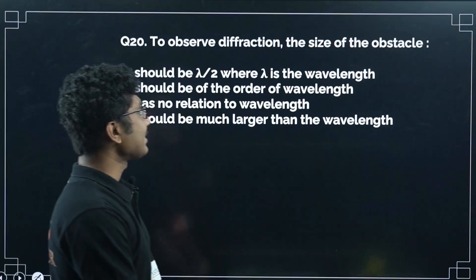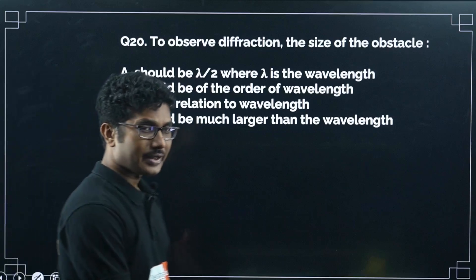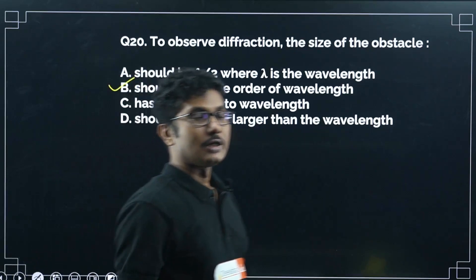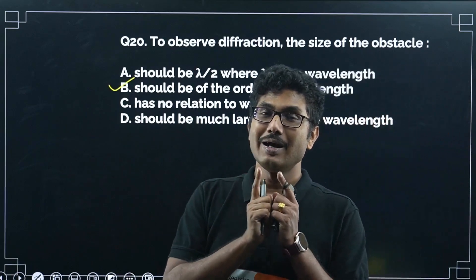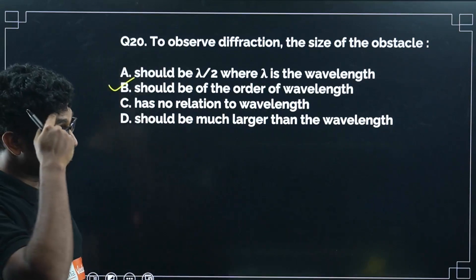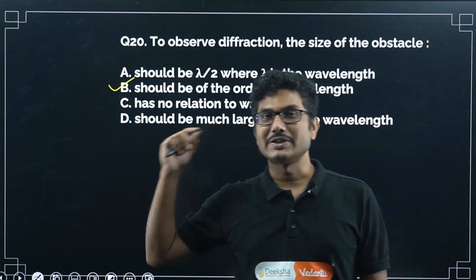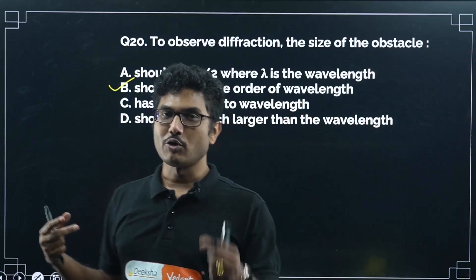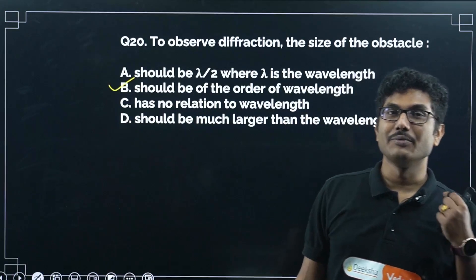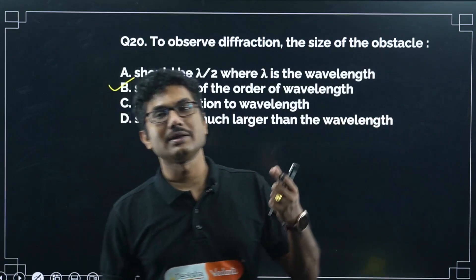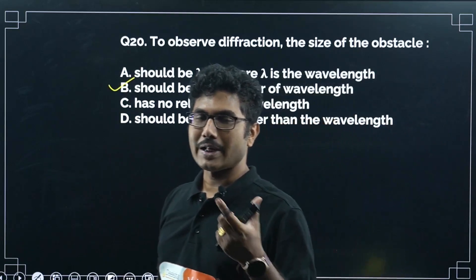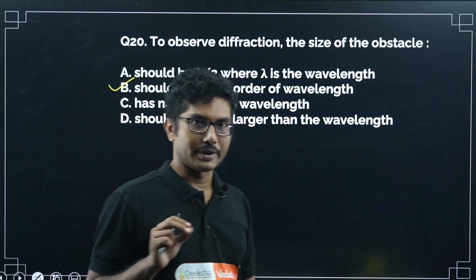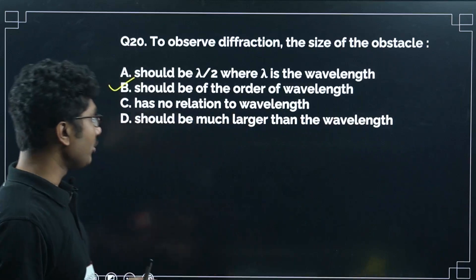To observe diffraction, the size of the obstacle (or slit width for interference) should be of the order of the wavelength. For example, using 600 nm light, diffraction is observable with slit widths from about 1000 nm (1 μm) up to maybe 10–20 μm. If the obstacle is much larger, like 1 meter, you will not observe diffraction at optical wavelengths.